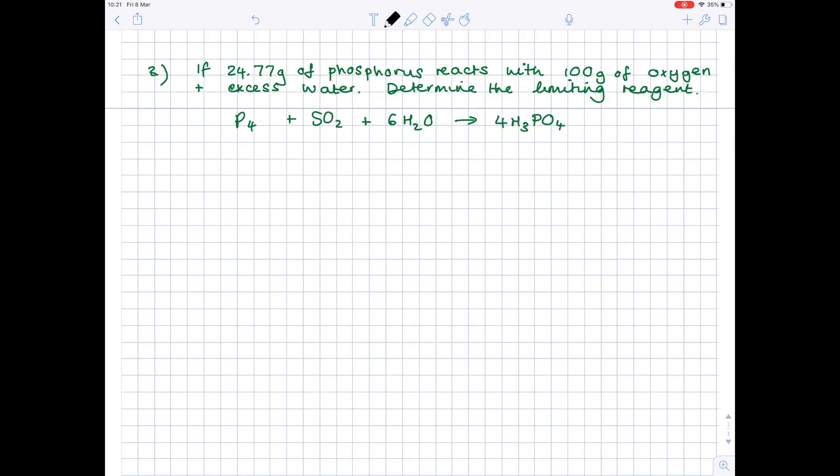In our final example, we're being asked if 24.77 grams of phosphorus reacts with 100 grams of oxygen and excess water to determine the limiting reagent. So same as before, our table: mass, MR, moles. We've been given the two masses, so phosphorus is 24.77, oxygen is 100 grams. Let's work out the MR of phosphorus. That's going to be 30.974 times 4 to get 123.896.